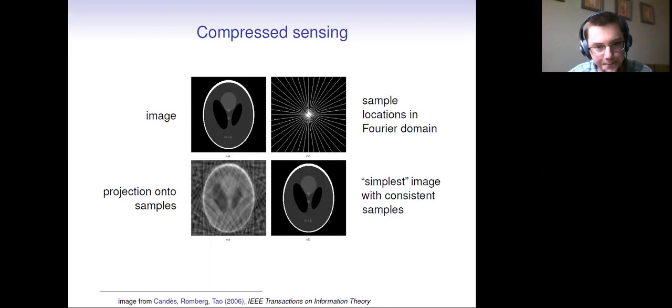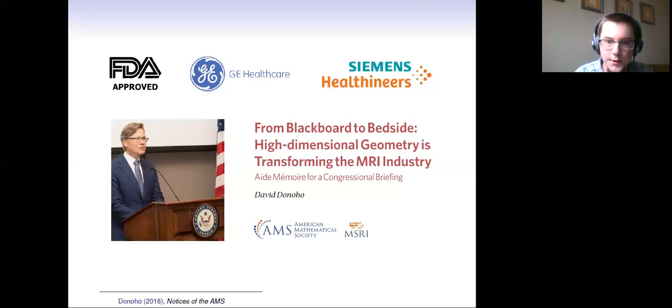If you only took the ones that you see, then you end up with this low quality, unfortunate picture at the bottom left. Candace Romburg and Tao discovered that there was a rather simple approach to acquire the simplest image with consistent samples, which I can't tell the difference between these two images. This compressed sensing technology has made its way into FDA approved MRI machines by GE Siemens. David Donahoe shares his congressional briefing in the AMS notices, and it's a very interesting read from the perspective of you have to tell non-experts why math matters.